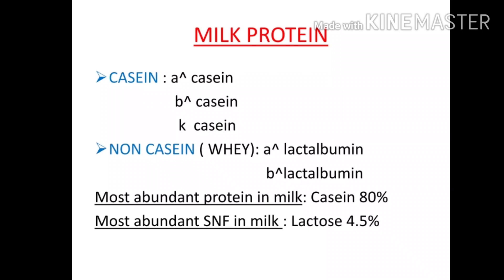Next is non-casein, whose other name is whey. There are 2 types of whey: alpha-lactalbumin and beta-lactalbumin. The most abundant protein in milk is casein.